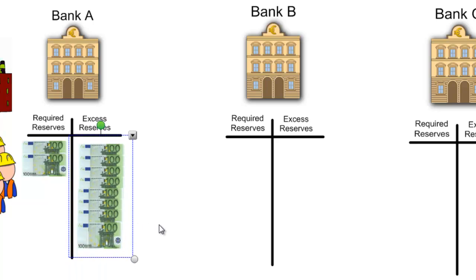The question is: what will the commercial bank wish to do with these 800 euros of excess reserves? The savers at this bank are earning interest on their savings. In order to pay the savers interest, Bank A must earn interest on its reserves. So Bank A has 800 euros that it wants to loan out so that it can charge interest to a borrower.